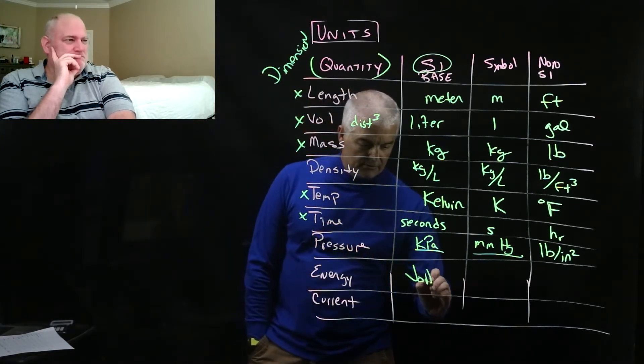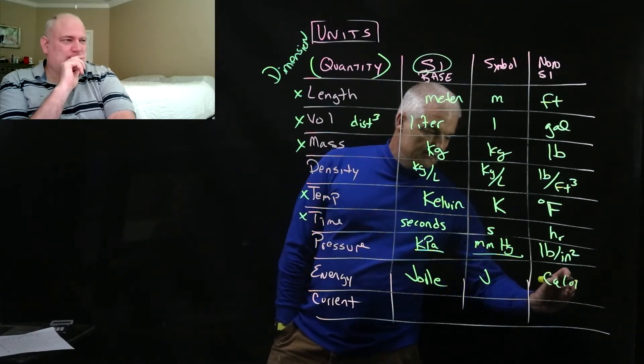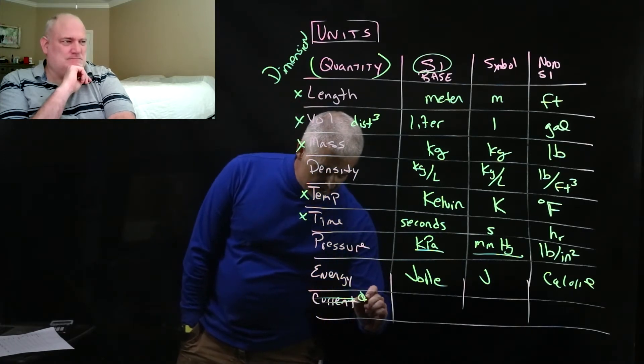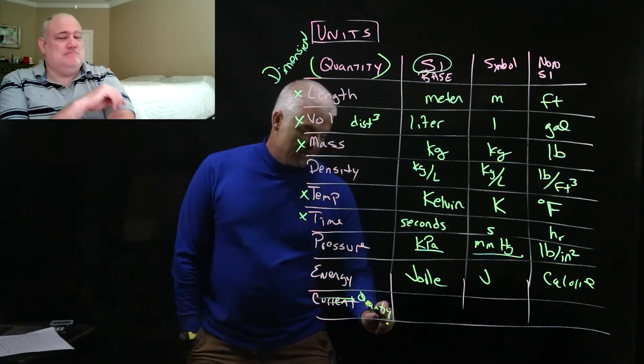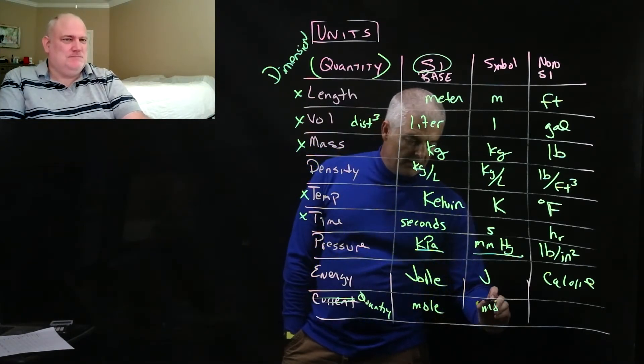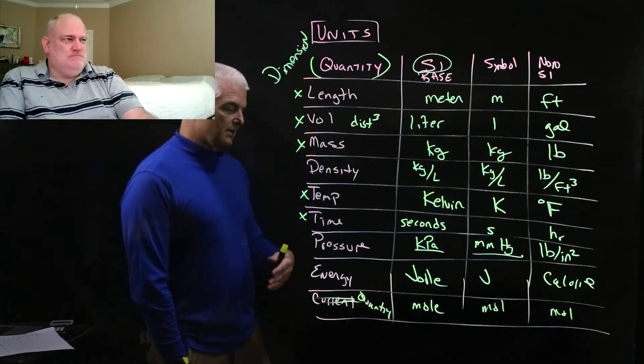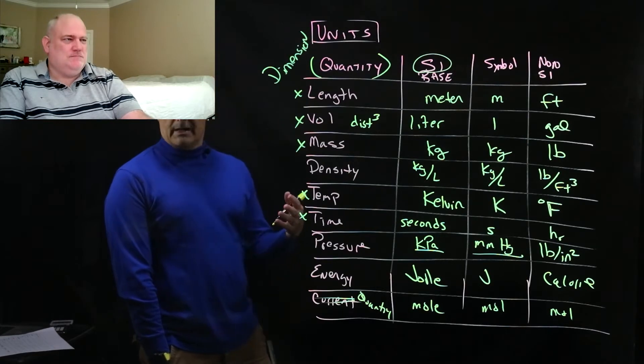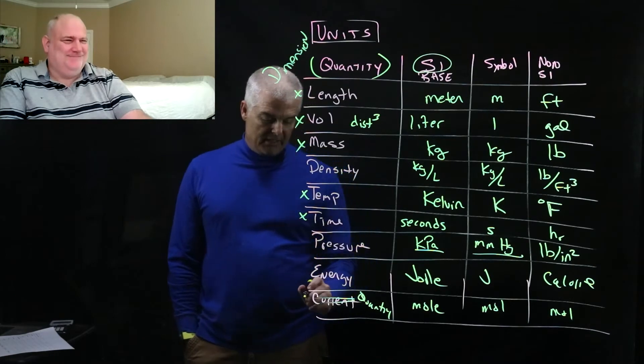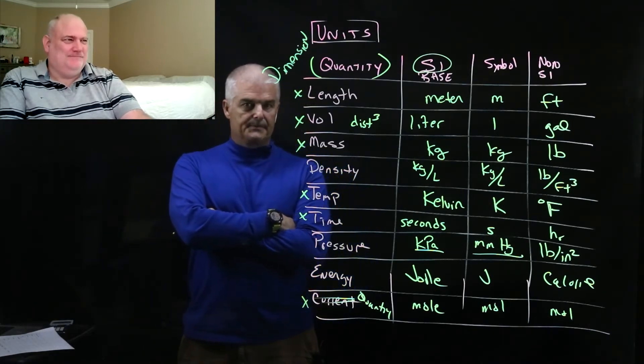Energy, it's a joule, J, and this would be a calorie. And then, actually, let's not do current, but let's just talk about one more that's called quantity. And the unit on this is called a mole. And the symbol for a mole is M-O-L. And there is no non-SI thing. And this is going to be something that's going to be very important in our class as we move forward. You're going to learn all about moles. Because moles are awesome. And it measures, it's a base unit that measures something very important, particularly in the world of chemistry.